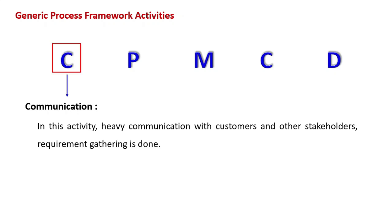We are working on a software project, but first we need to know exactly what we want to do — what objective we want to fulfill and what needs we want to meet. We can get all this information through interactions with stakeholders, clients, or users. So, communication is very important for this.